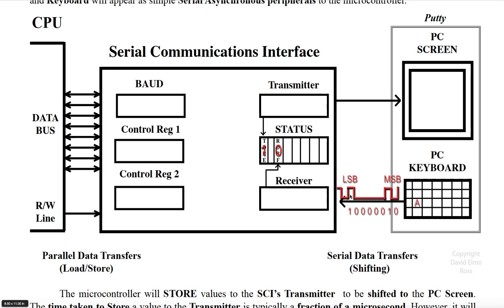After this, the least significant bit to the most significant bit of our data for the capital letter A, which is 41 hex, will appear here, followed by a high bit held for one bit time called the stop bit. The stop bit gives the receiver time to deal with what came in from our PC keyboard before another key press comes in. Once all that gets shifted into the receiver, we have the value 41 sitting here.